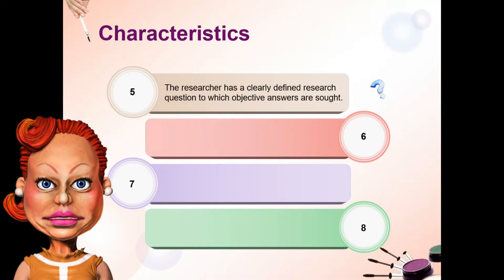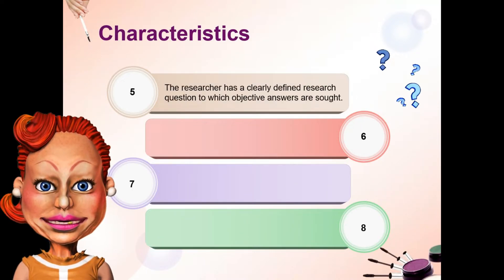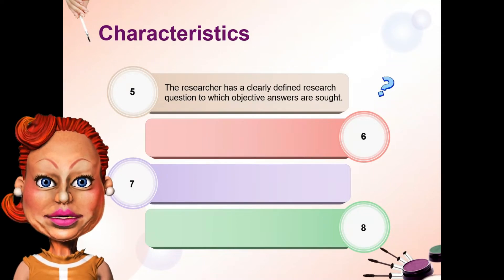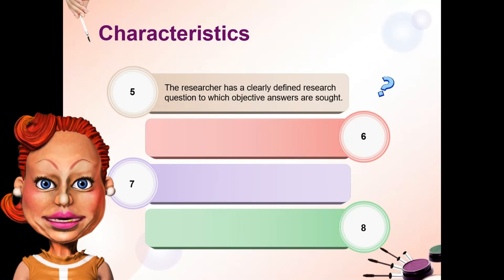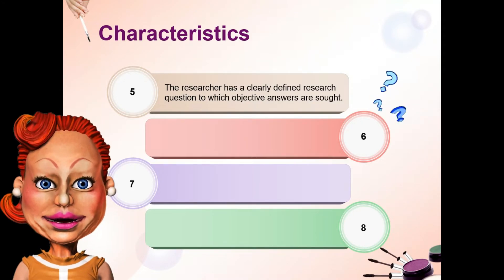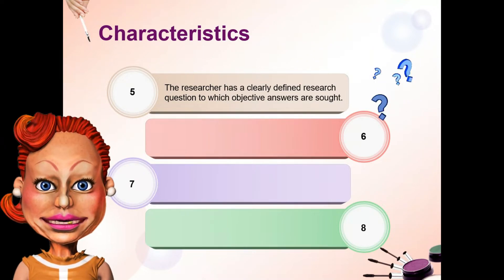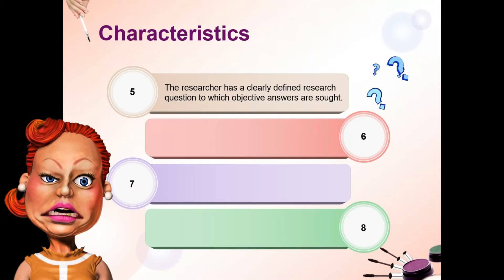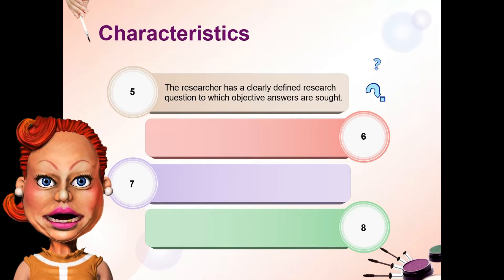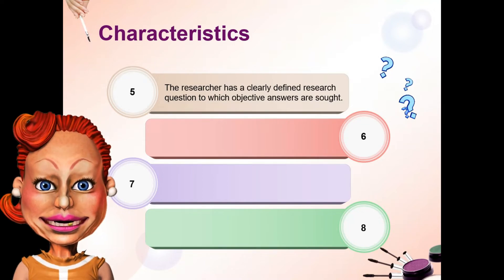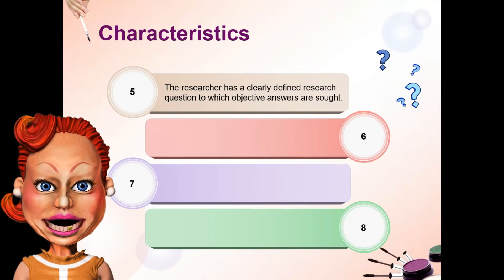Ang susunod naman ay, the researcher has a clearly defined research question to which objective answers are sought. Malinaw — since ang quantitative research ay dapat planado sa umpisa pa lamang, nararapat lamang na malinaw ang tanong o question na gusto mong malaman o sagutin. Hindi pwedeng pabago-bago. Kung ano yung sinet mo sa umpisa pa lang ng research mo, dapat yun na yun — hindi gaya ng qualitative research na pwedeng-pwede magbago during the research process.